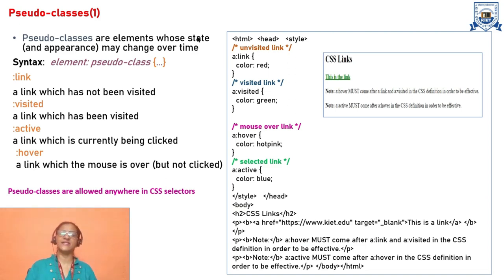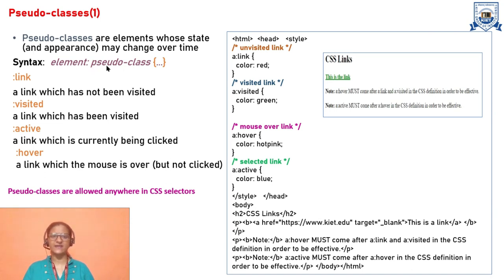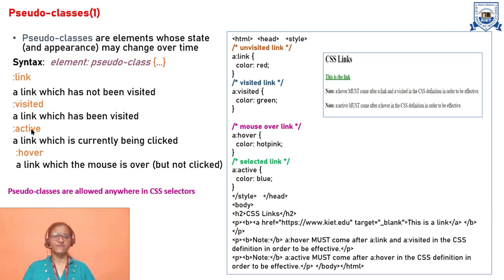Pseudo classes are elements whose state or appearance may change over time. We have the simple example of a link that has not been visited — after we click it, its color changes. We can manage this with pseudo classes. The syntax: the element, separated by a colon, with the pseudo class mentioned. Link means a link not yet visited; visited means a link that has been visited; active means a link currently being clicked; hover means the mouse is moving over the link but it hasn't been clicked.